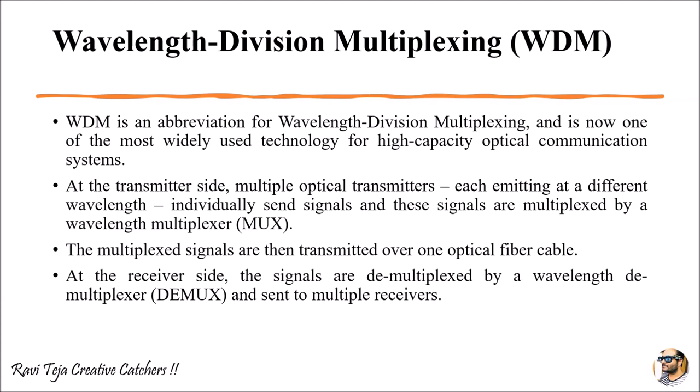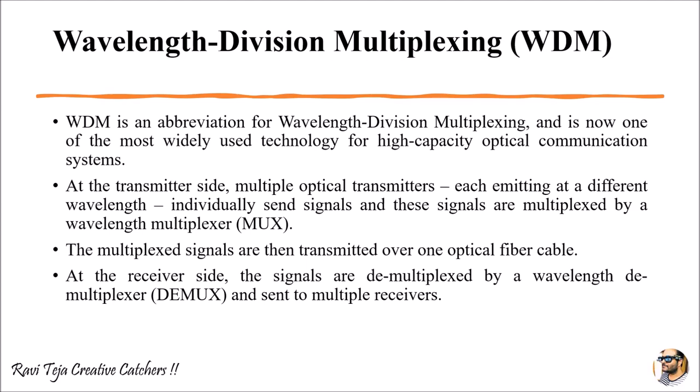Once all the signals of different wavelengths are multiplexed into a single signal, the multiplexed signals are then transmitted over an optical fiber cable. At the receiver end, the signals are demultiplexed using a demultiplexer, or DEMUX, based on the wavelengths, and are sent to multiple receivers. This is the overall concept.